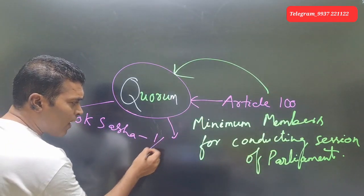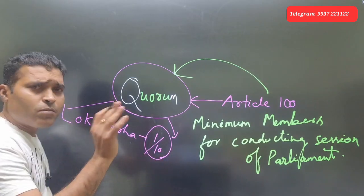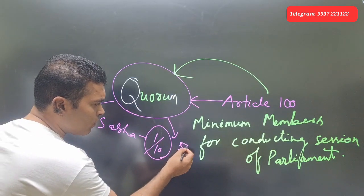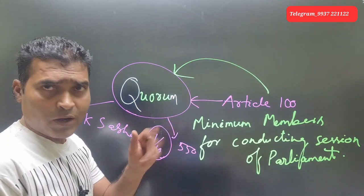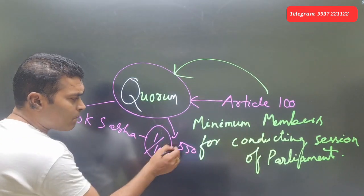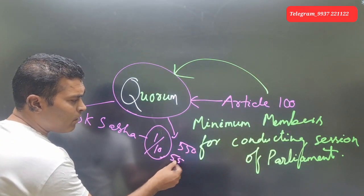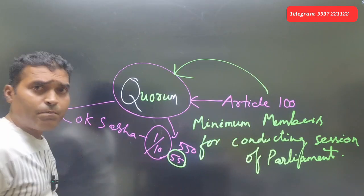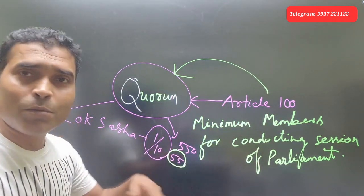The minimum number is 10% of total members. Suppose, for example, 525 members are total members, then 55 members are the minimum required.